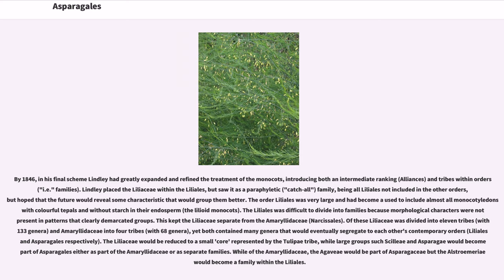The order Liliales was very large and had come to include almost all monocotyledons with colorful tepals and without starch in their endosperm — the lilioid monocots. Liliales was difficult to divide into families because morphological characters did not present patterns that clearly demarcated groups. The Liliaceae was divided into 11 tribes with 133 genera, and the Amaryllidaceae into 4 tribes with 68 genera, yet both contained many genera that would eventually segregate to each other's contemporary orders, Liliales and Asparagales respectively. The Liliaceae would eventually be reduced to a small core represented by the Tulipae tribe.